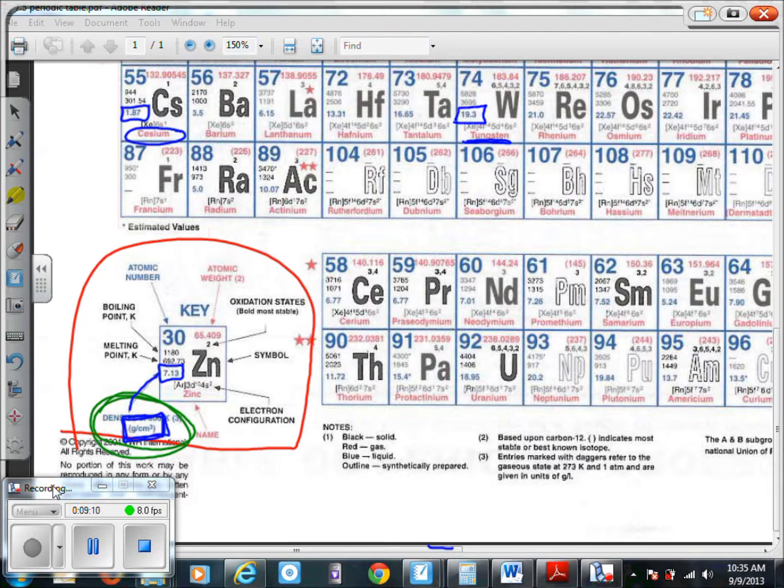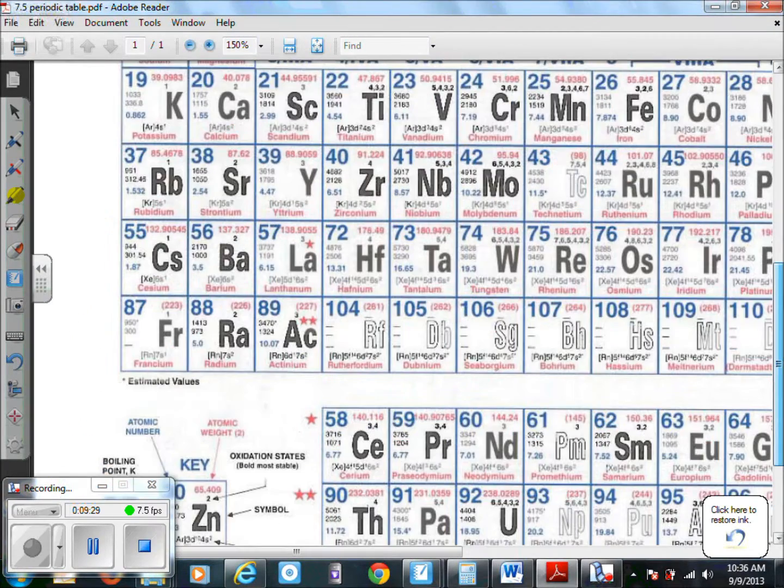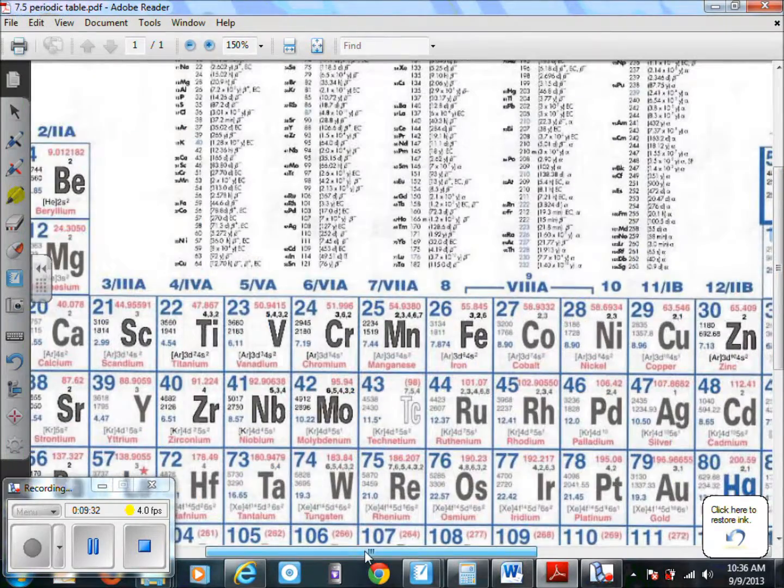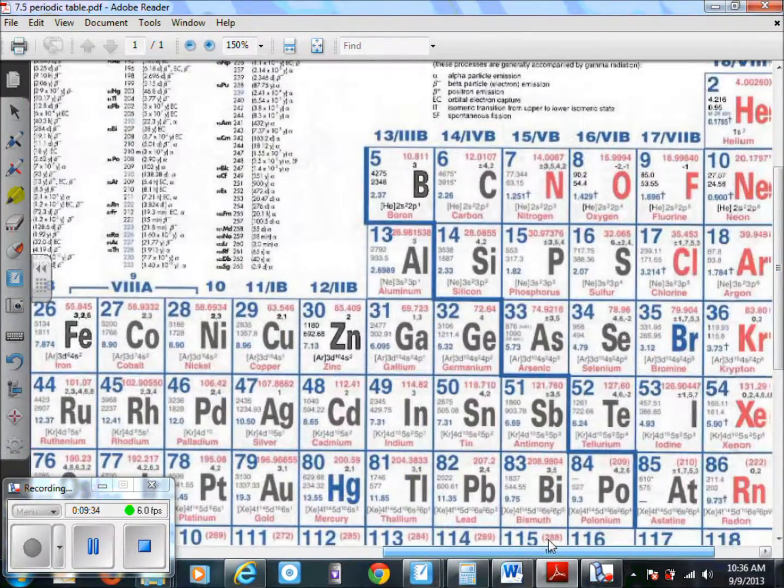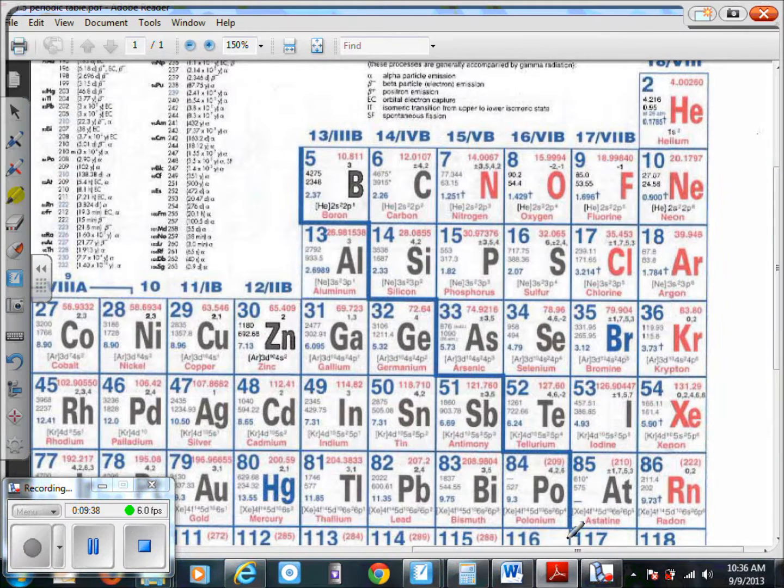Tungsten is 19.3 grams per cubic centimeter - that's the way to read your periodic table. But we're not looking for density of zinc or tungsten. What we're actually looking for today is oxygen. So we take and find oxygen on our charts. You'll become very familiar with this chart, so you better start looking at it now.